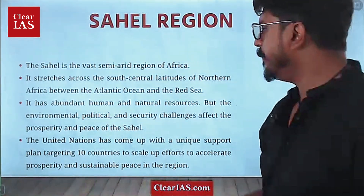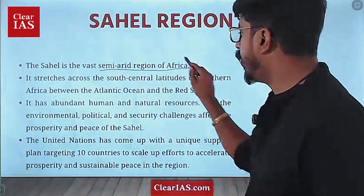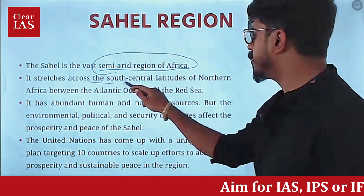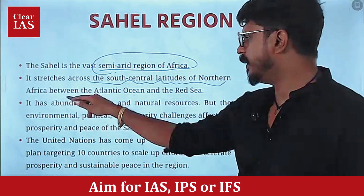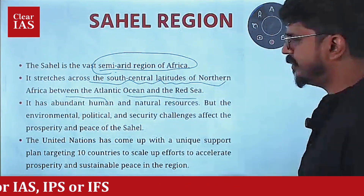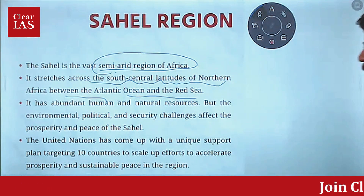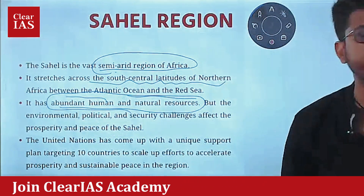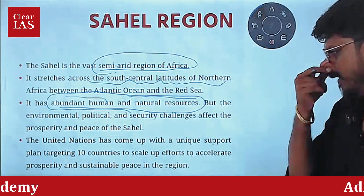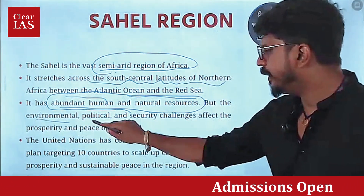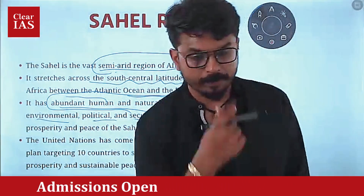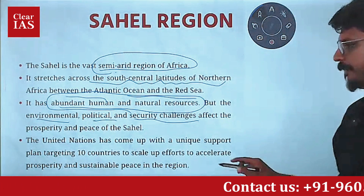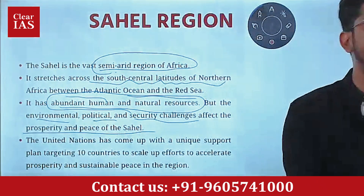Now let's write down something about the Sahel region. It is a vast semi-arid region — not arid like the desert, but semi-arid — in Africa. It stretches across the south-central latitudes of northern Africa between the Atlantic Ocean and the Red Sea. It has abundant human and natural resources, but environmental, political, and security challenges affect the prosperity and peace of the Sahel.